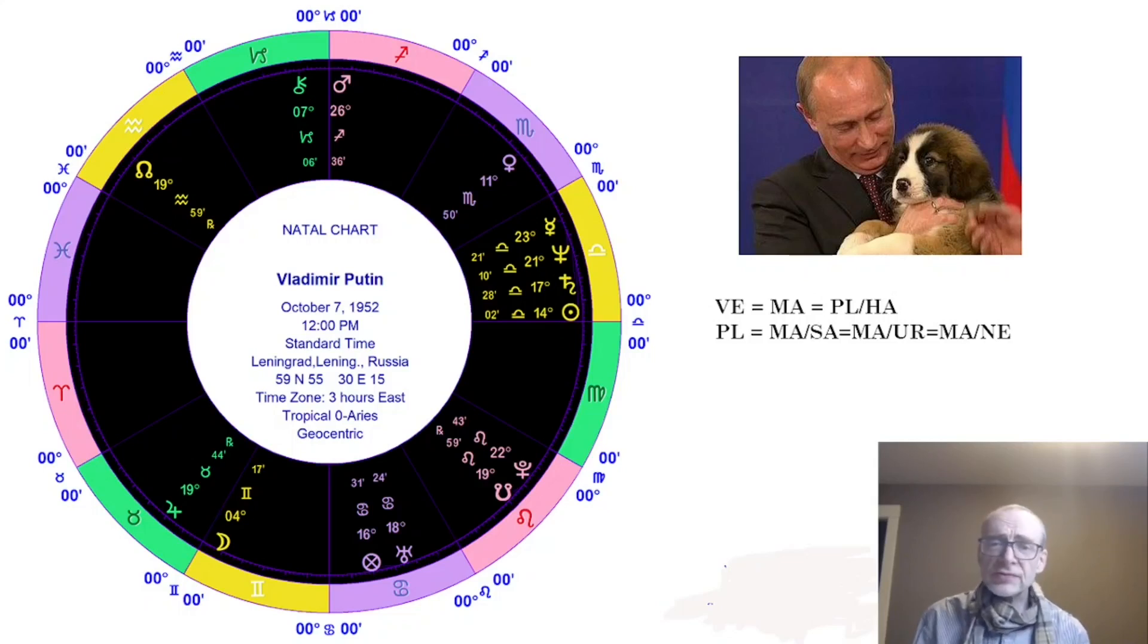But is he a monster? Can we tell whether he's a monster from his horoscope? This horoscope that I've set up here, as I said, hasn't got an ascendant, because I don't have a time of birth that I can rely on. But we do know that he has his Sun in Libra. That might sound strange to have someone as powerful as him with the Sun in Libra.